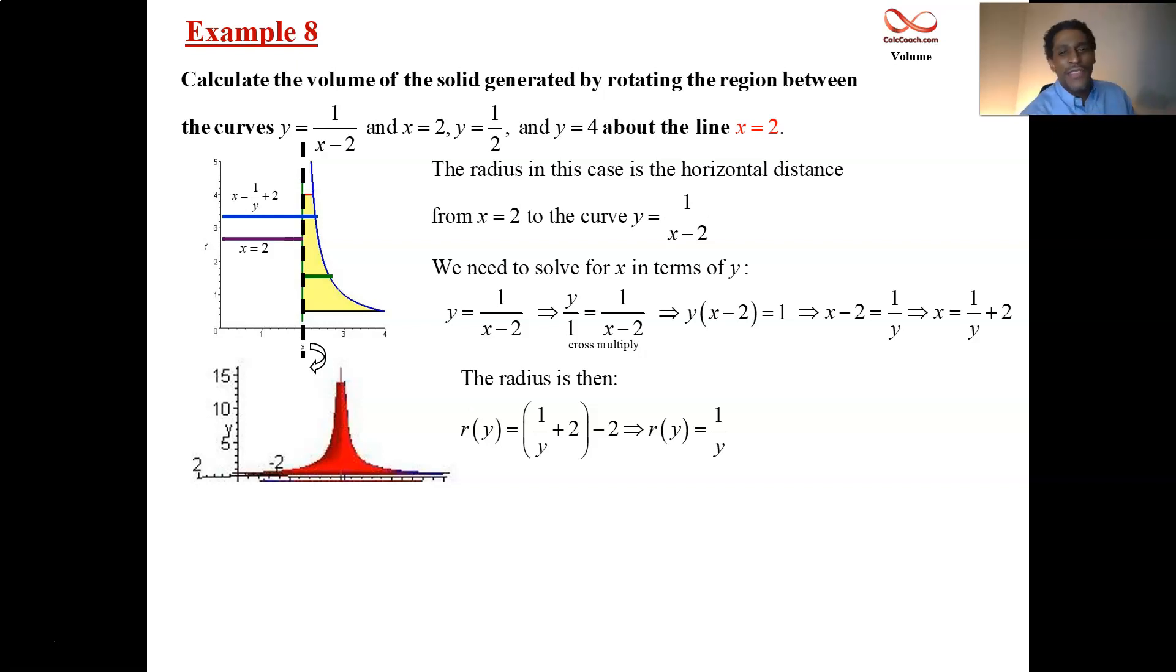You could have outside the box thought about this question and legitimately been able to get it by shifting this over. You'd have exactly, instead of the function one over x minus two, you have the function one over x. The same volume if you rotate around the y-axis. Well, anyway, we're all set. It's a disk problem.